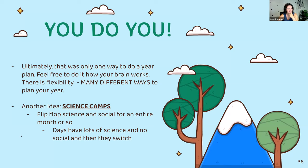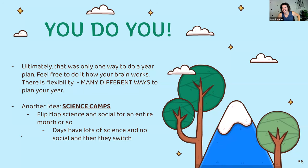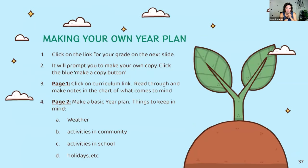Another idea would be science camps, where you flip-flop science and social for an entire month — lots of science and no social, then flip. This might make it easier to reach the transfer phase. But it's whatever works for you.